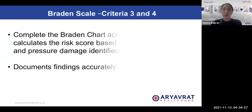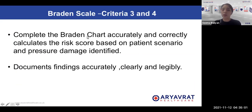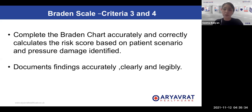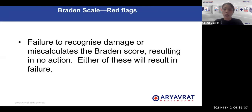Criteria three and four require you to complete the Braden's chart accurately and correctly according to the patient scenario, and then document your findings accurately, clearly, and legibly. In summary, the pressure area assessment station requires you to complete a Braden's score, write down at least eight areas prone to pressure ulcers, and write down seven signs suggestive of pressure area formation. The red flag is failure to recognize damage or miscalculating the Braden's score resulting in no action — either of these will result in failure in the station.